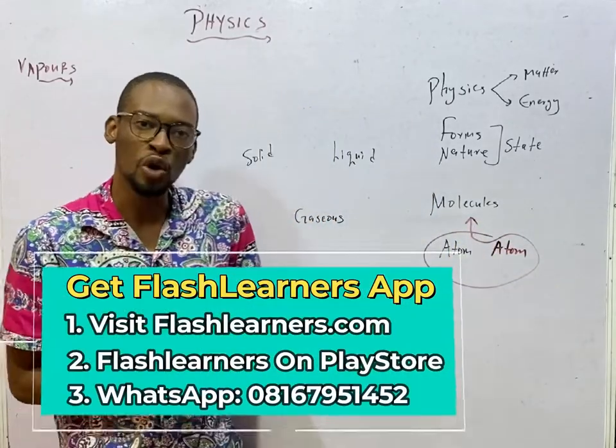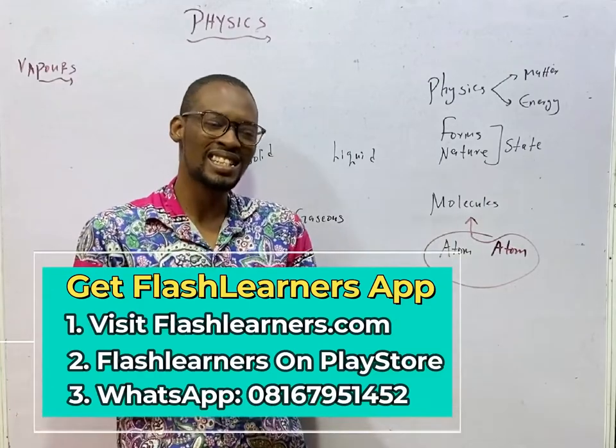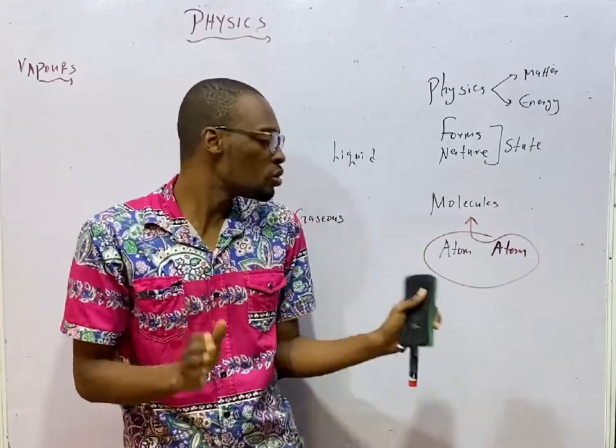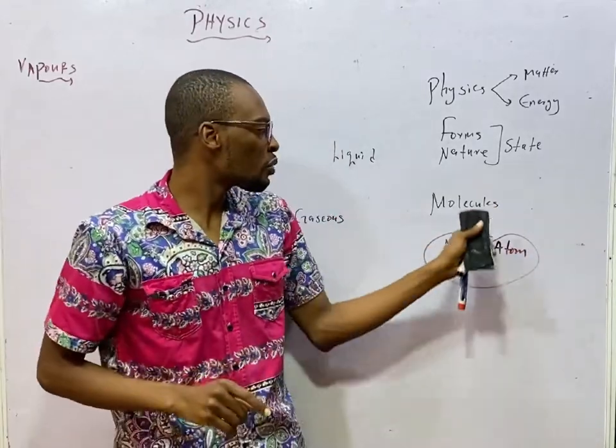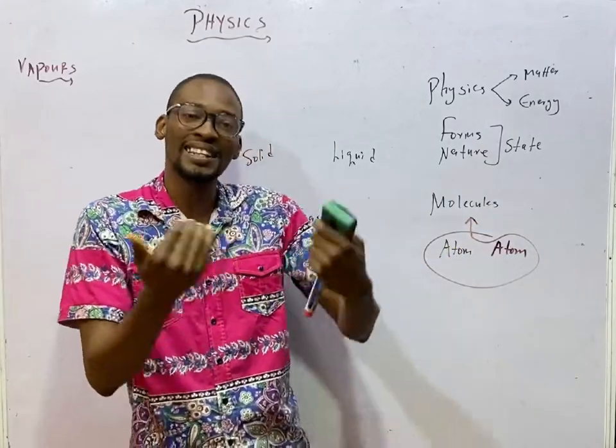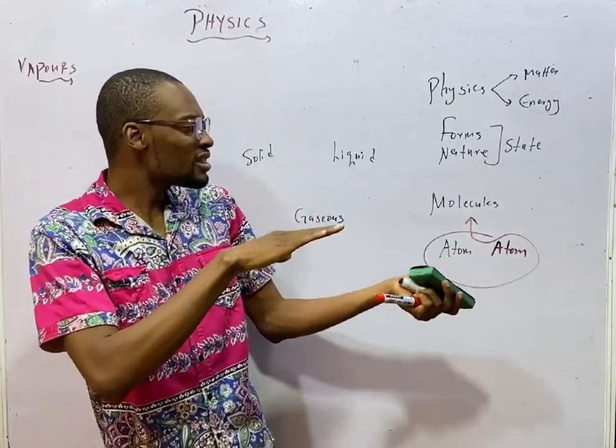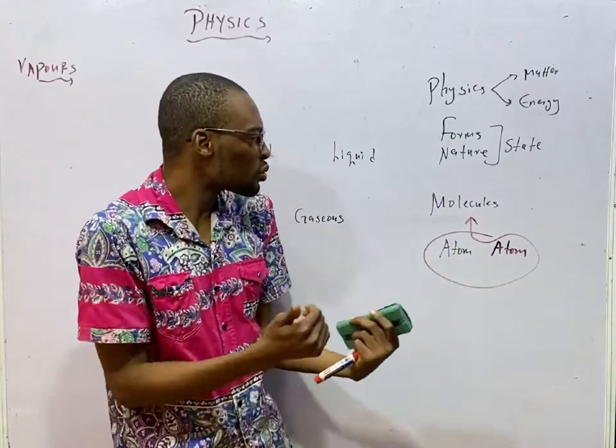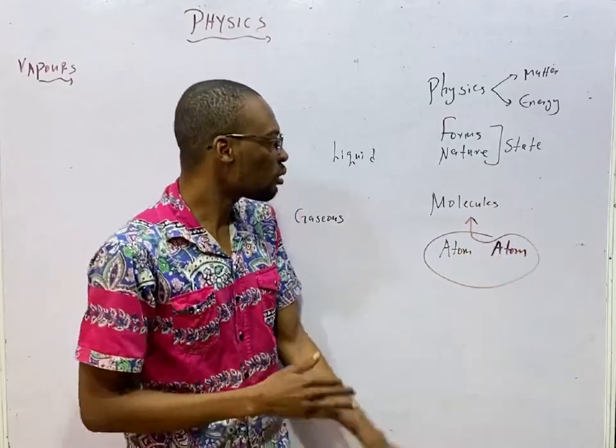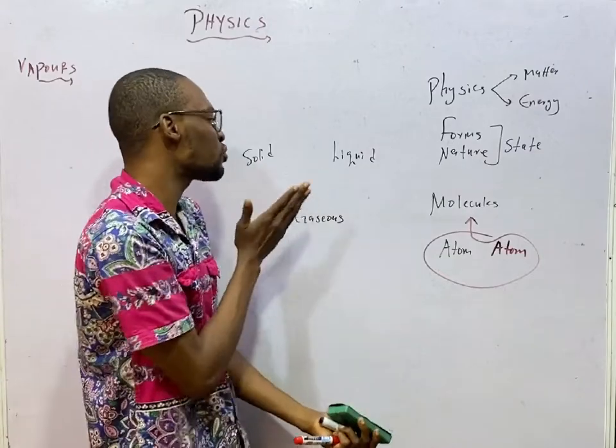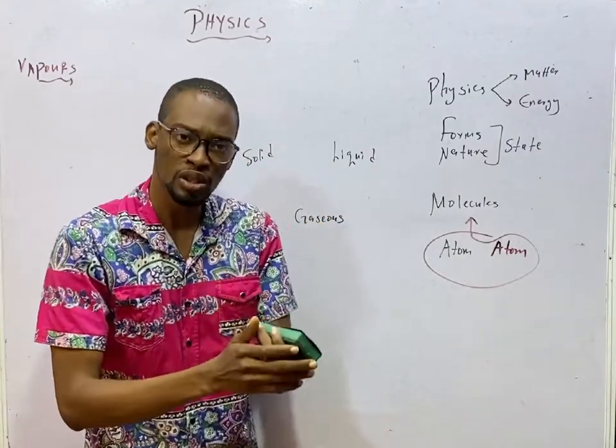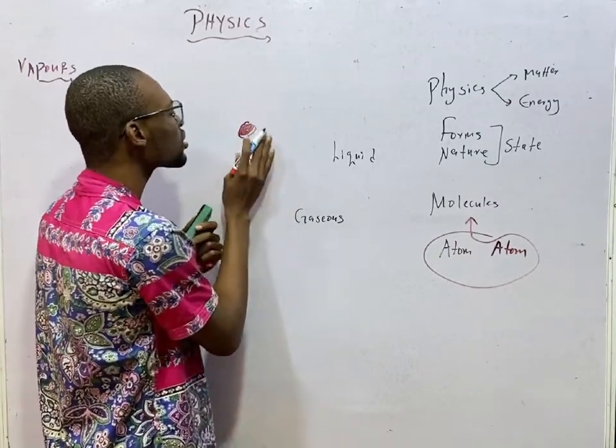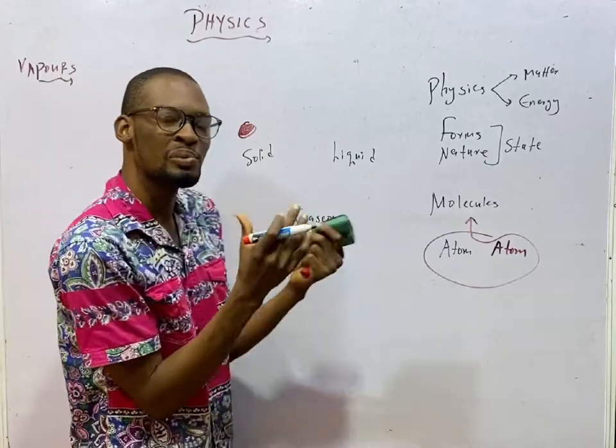Molecule becomes the smallest part of a substance that is capable of independent existence. Not that molecule is the smallest part of a substance. Atom is the smallest part. But molecule is the smallest part that can exist on its own, exists independently and still retain the property of that substance. Every substance you see, solid, liquid, and gas, they are made up of these molecules. But for solids, the molecules are so close together. Because of this closeness, solids have definite shape.